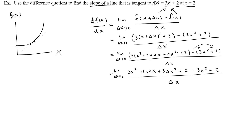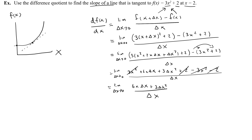Now simplify further. The 3x squared terms cancel, and the 2 and negative 2 cancel. I'm left with the limit as delta x approaches zero of 6x delta x plus 3 delta x squared, all over delta x. I can now factor out delta x from each term in the numerator and cancel it with the delta x in the denominator.